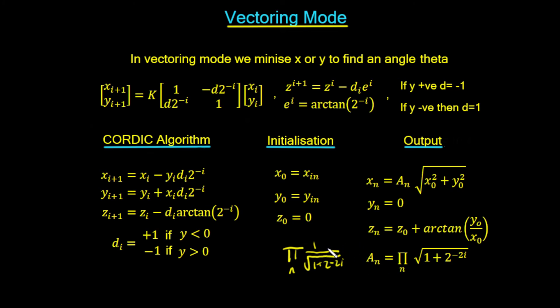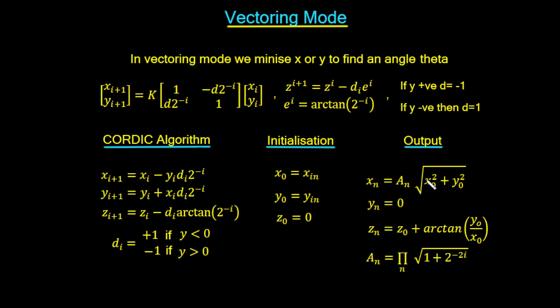If we leave k out of the rotation, the final point is scaled by a factor of 1/k. The value for k can be written as the product of cosines, where each cosine is 1 over the square root of 1 plus 2^{-2i}. The value a_n is our process gain, which is the reciprocal of k — so it's 1/k. Our value for x_n is simply given by Pythagoras: we take x_0 squared plus y_0 squared and take the square root, then multiply by the gain factor a_n, which is 1 over k, approximately 1.647.